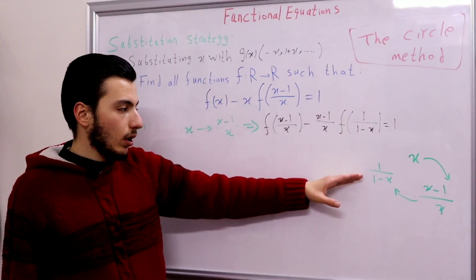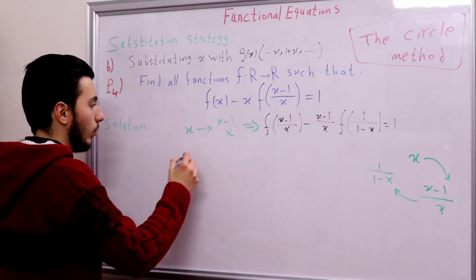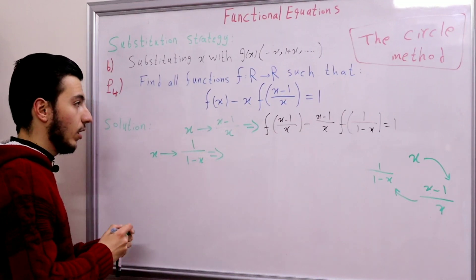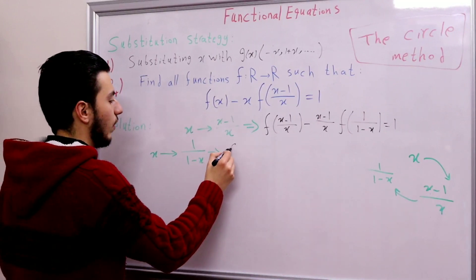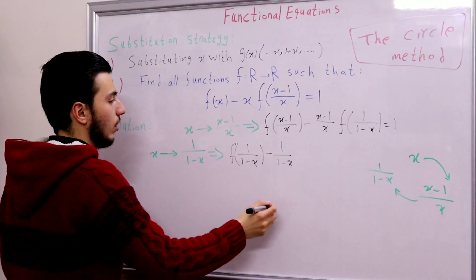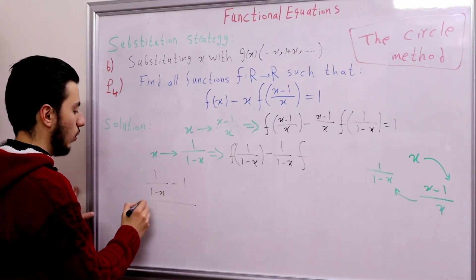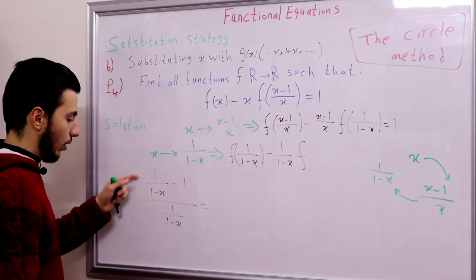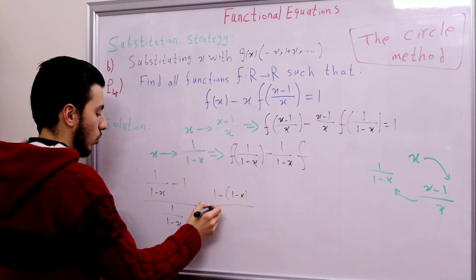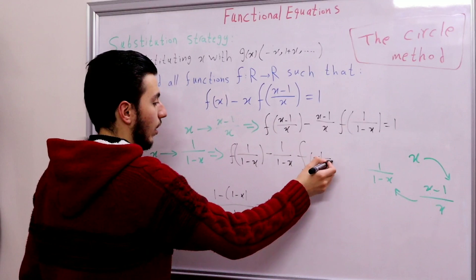We will substitute x with 1 over 1 minus x in the original functional equation. So the second substitution is x substituted with 1 over 1 minus x. That gives f(1 over 1 minus x) minus 1 over (1 minus x) times f of (1 over (1 minus x) minus 1 over (1 over (1 minus x))). Multiplying everything by (1 minus x) gives 1 minus (1 minus x) over 1, which is simply x. So now we have f(x) and that equals 1.